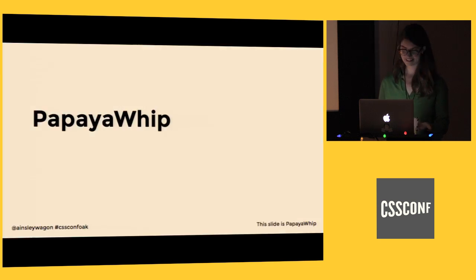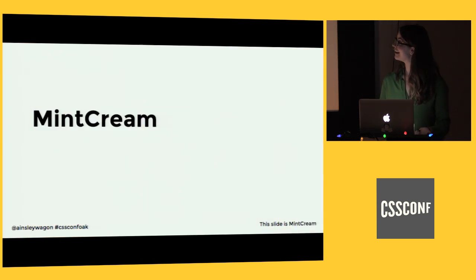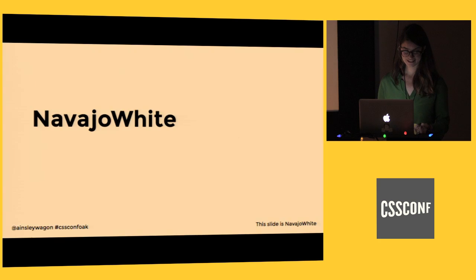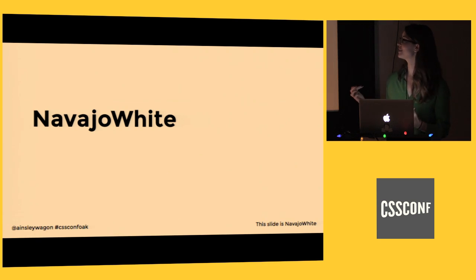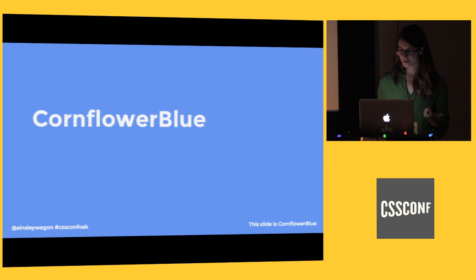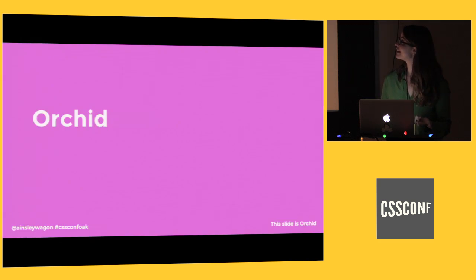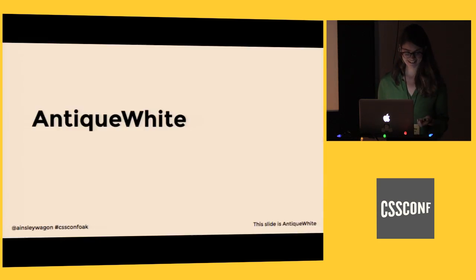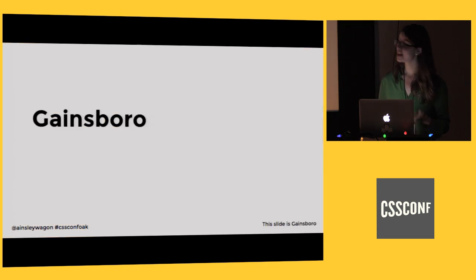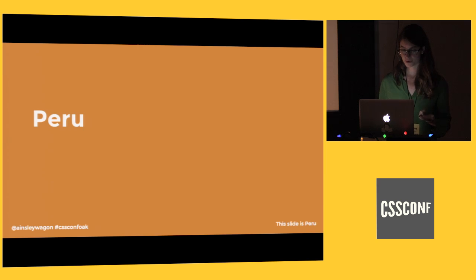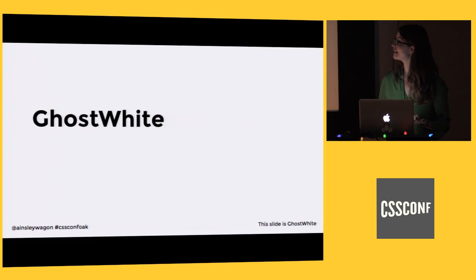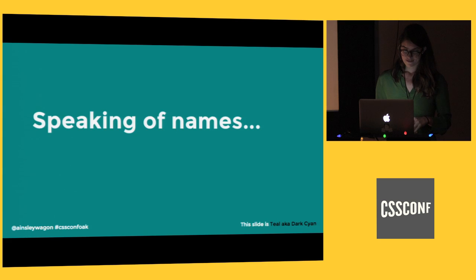I'll highlight some of my favorites: Honeydew, Papaya Whip, Mint Cream, Navajo White — that was one of the first ones where I scrolled through and thought, what's Navajo White and why is it orange? — Cornflower Blue, Dodger Blue, Orchid, Antique White, Gainsboro, Saddle Brown, Peru, Ghost White. These are just a few of my favorites.